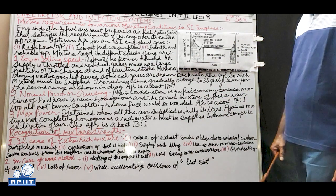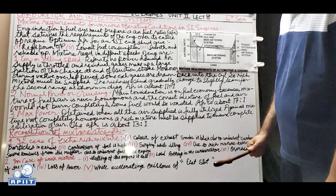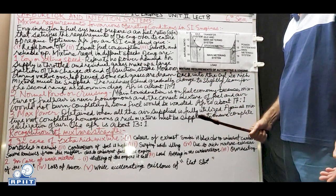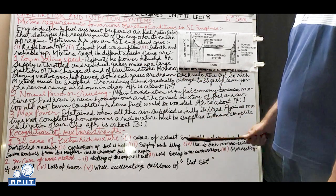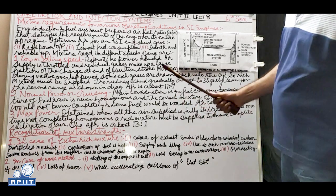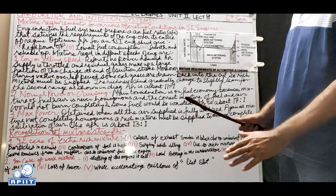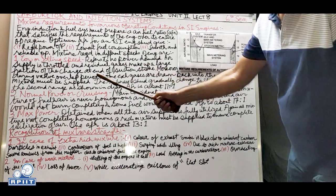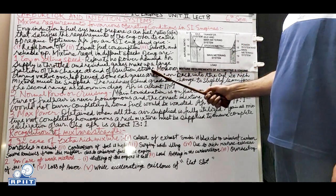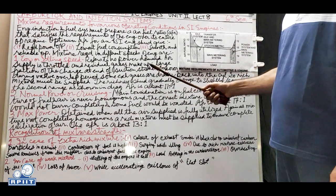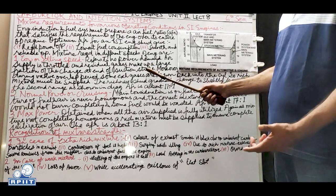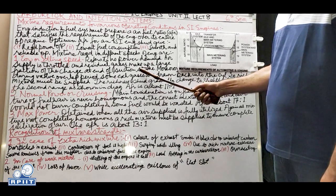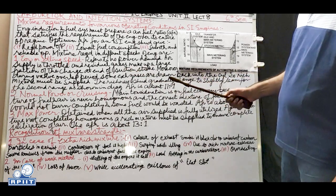At low or idling speed, there is low power demand - the vehicle is standing at a traffic light or moving very slowly without pressing the accelerator. Air supply is throttled and controlled. Residual gases make up a large fraction of the charge; since volumetric efficiency is never 100%, some burnt exhaust gases remain in the cylinder and mix with the fresh charge during the suction stroke.